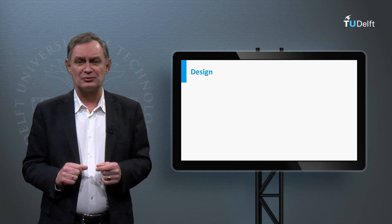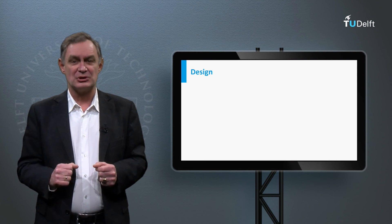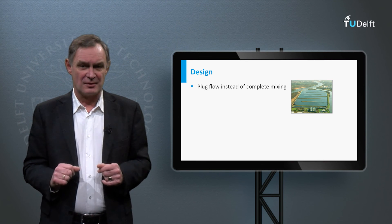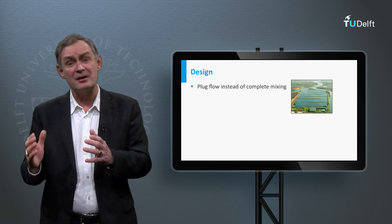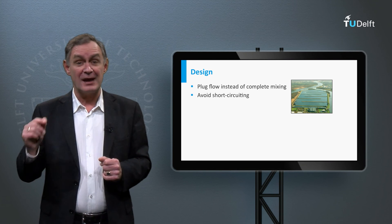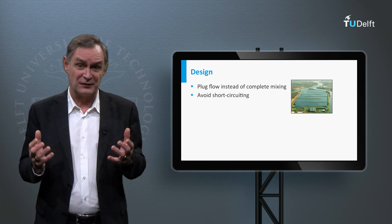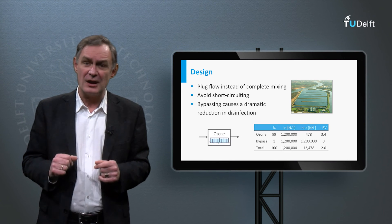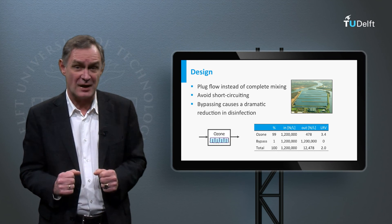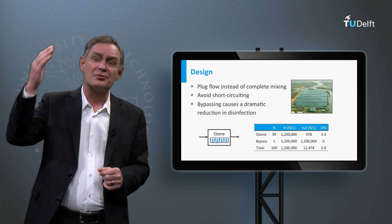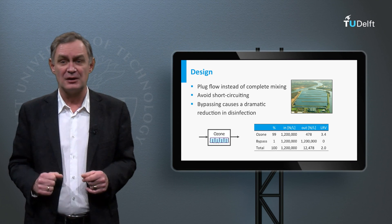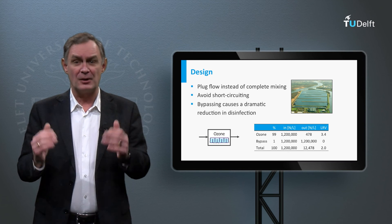Plug flow tanks are more efficient in the removal of pathogenic microorganisms than completely mixed reactors. Short circuiting should also be avoided, since it has a negative effect on the efficiency of disinfection. Here you can see an example of the dramatic effect of only 1% bypass on the total log reduction value of the system – it decreases from 3.4 to 2. This shows that not only a sufficient disinfectant dose is important, but also a proper design is required.